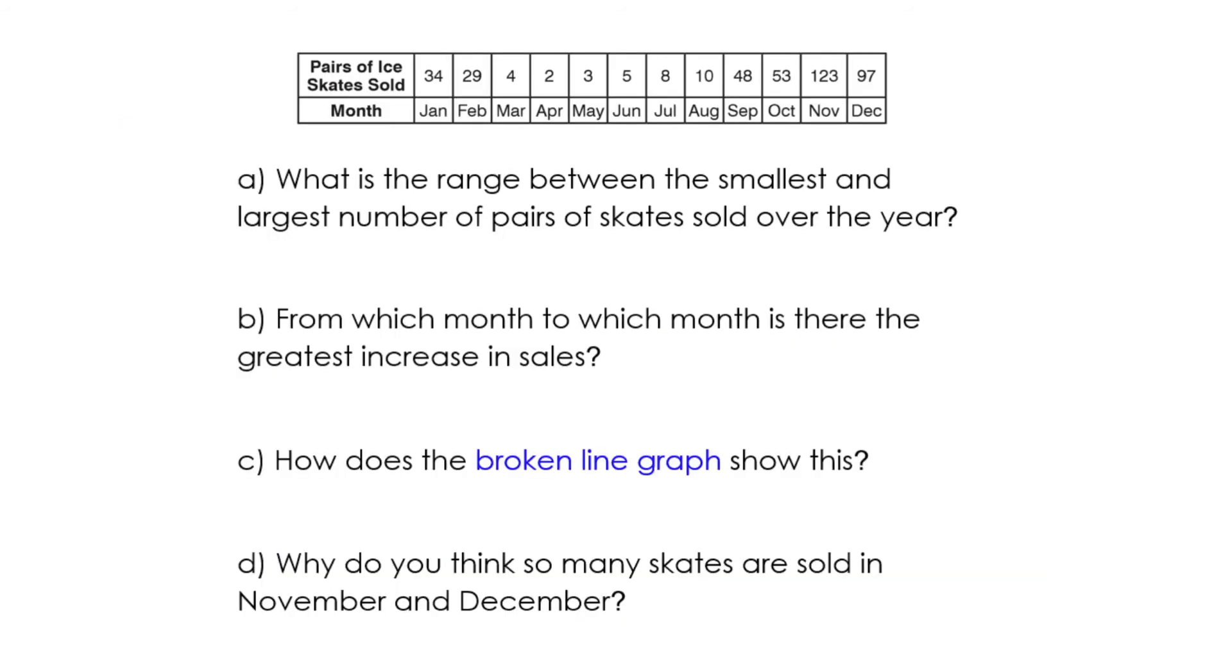What is the range between the smallest and the largest number of pairs sold? So range is biggest number subtracted by the smallest number. 123 minus 2 equals 121. From which month to which month is there the greatest increase of sales? I would say it's October to November.